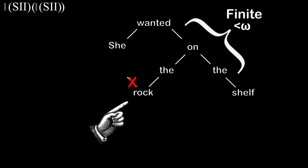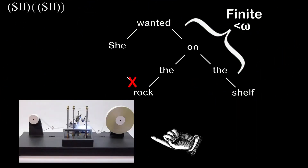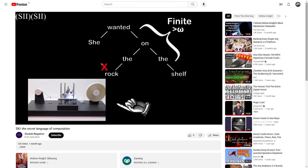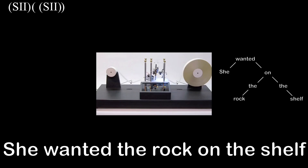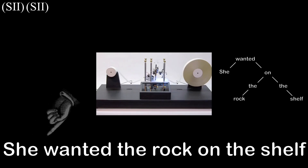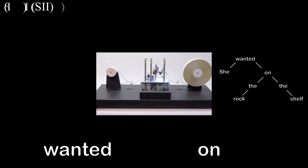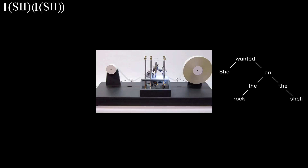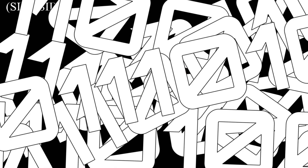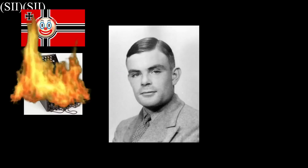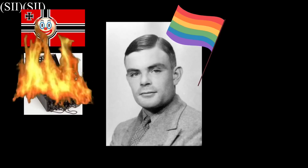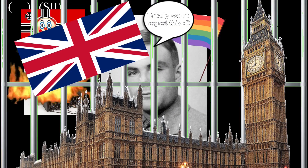Luckily, we have these things called Turing machines. In fact, you're using one to watch this video right now. Turing machines are one system we can use to turn a finite amount of information into an infinite amount of potential computational complexity. Turing machines can do recursion. Turing, who you might have heard of, cracked the Enigma code, was openly gay, and got arrested by the government that he served for being openly gay.